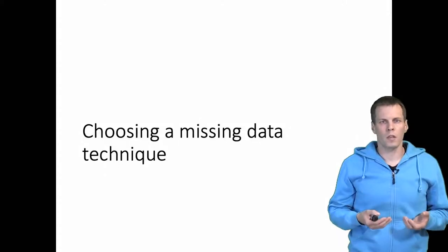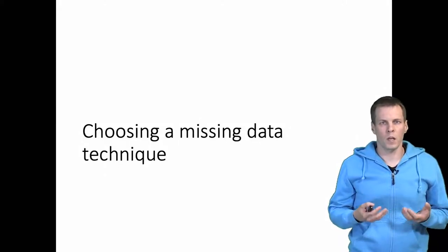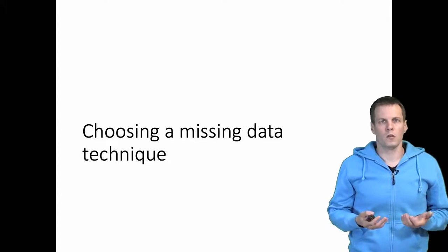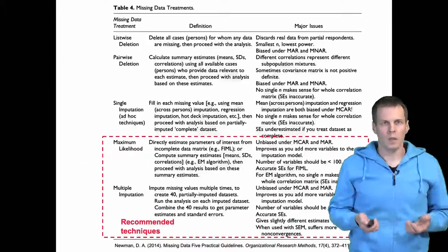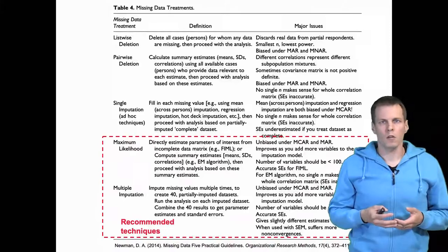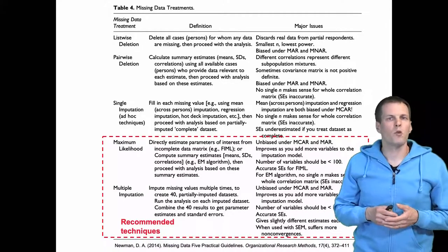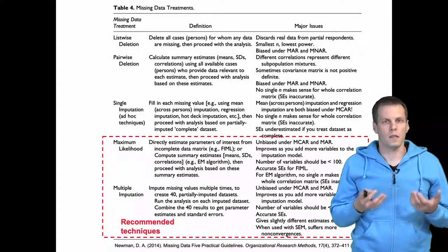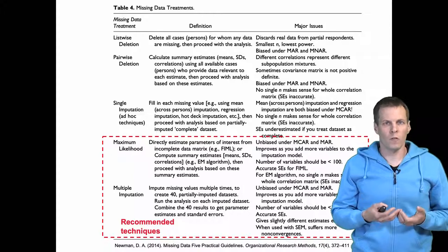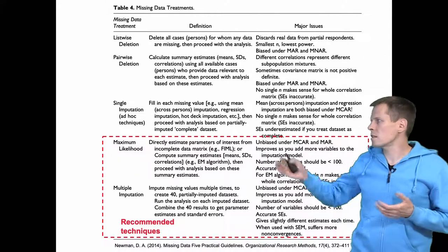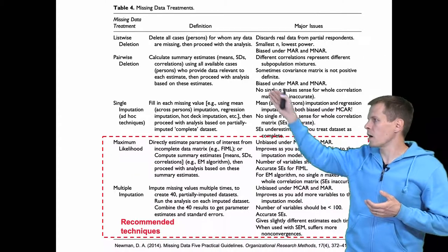There are a few techniques available for researchers for dealing with missing data. Which of these techniques should you apply, when and why? This article by Newman in Organizational Research Methods provides a nice overview of the available techniques. He divides these techniques into five categories.